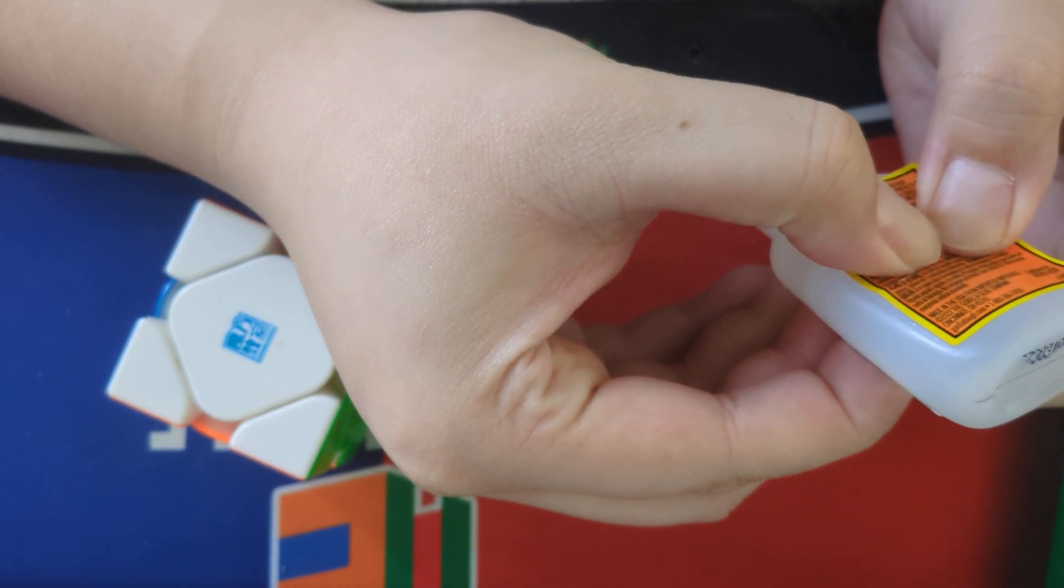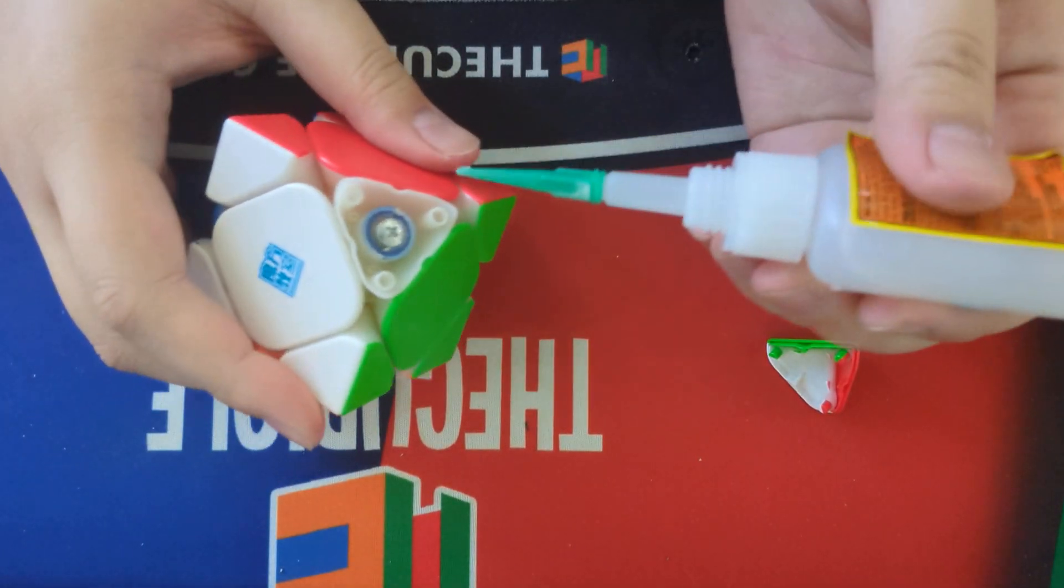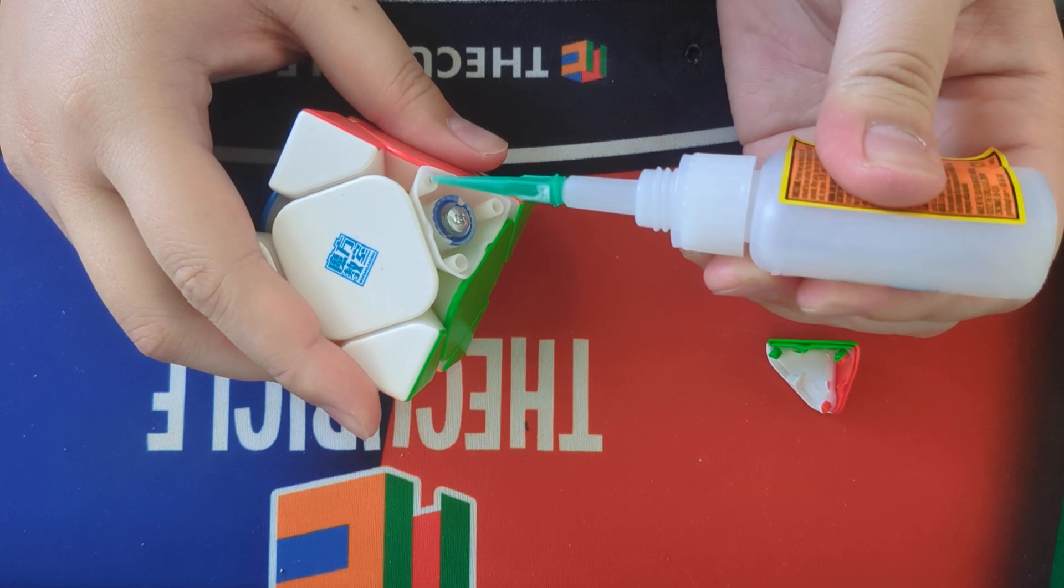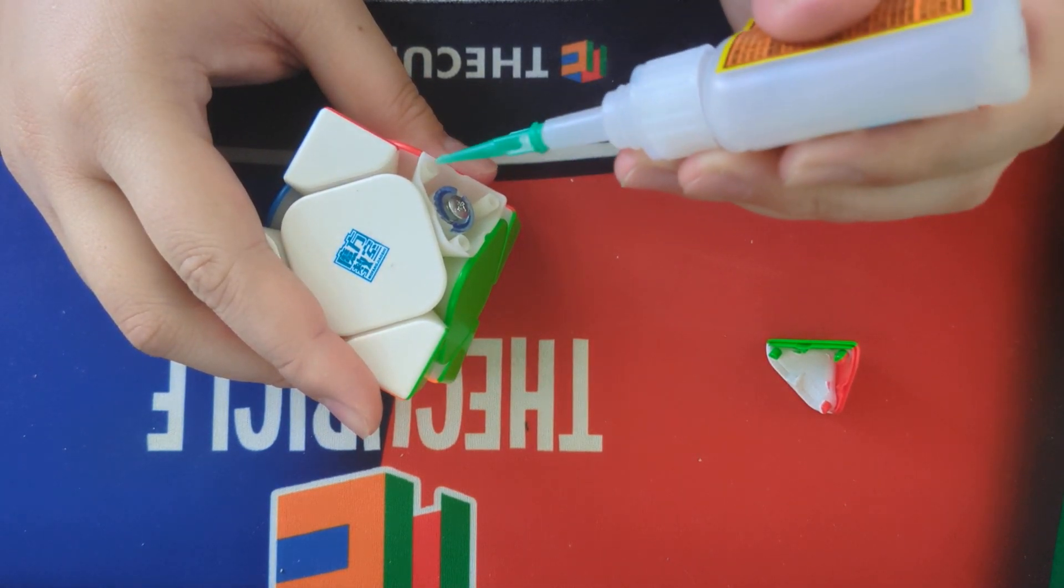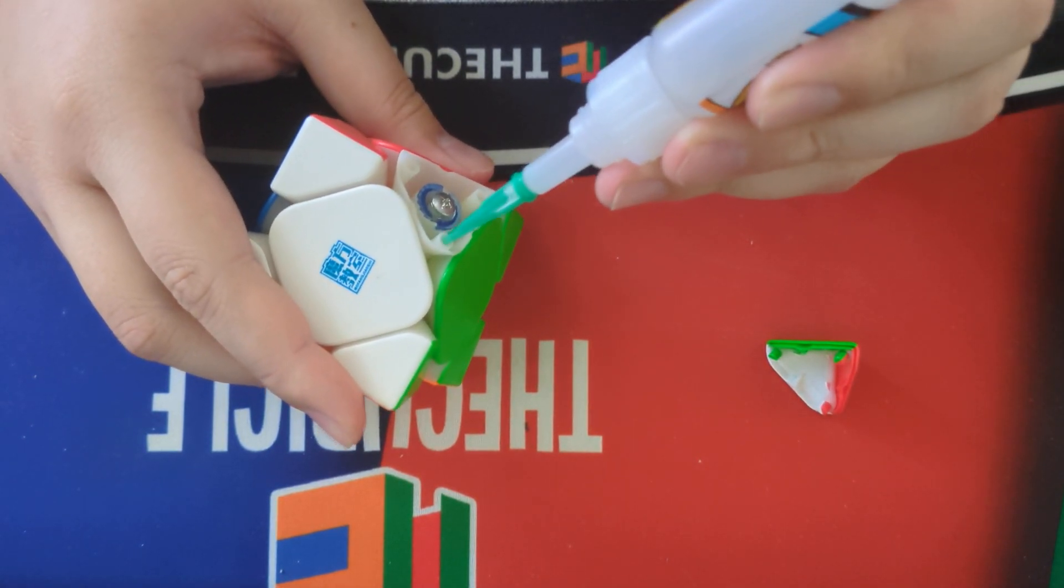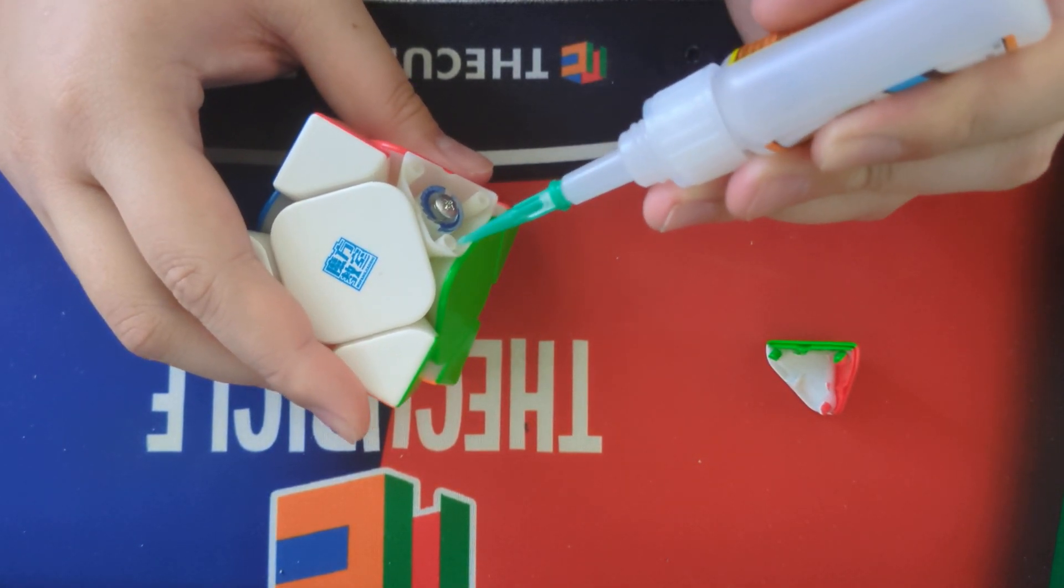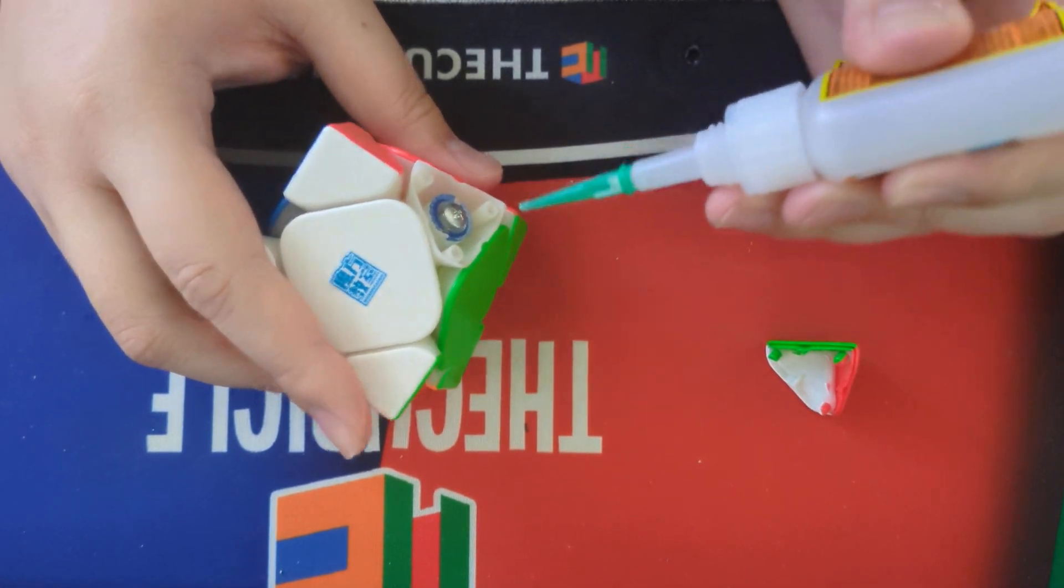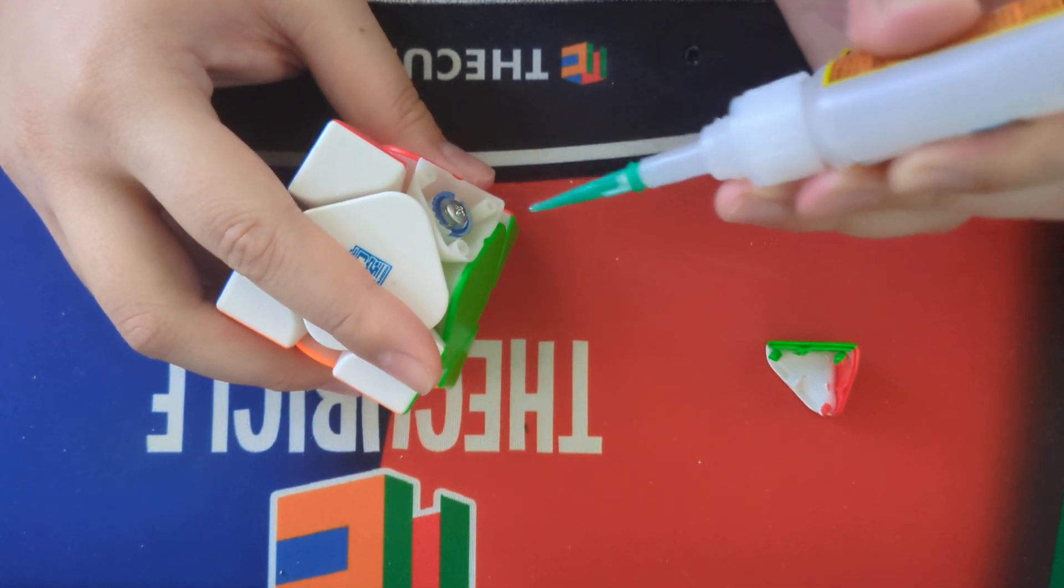And what this will do is it'll give it some more material for the pegs to kind of get onto. Now we don't want to fill up the entire thing with super glue because then there's absolutely no area for the pegs to go into. So we're just going to go ahead and put in a little bit per side.